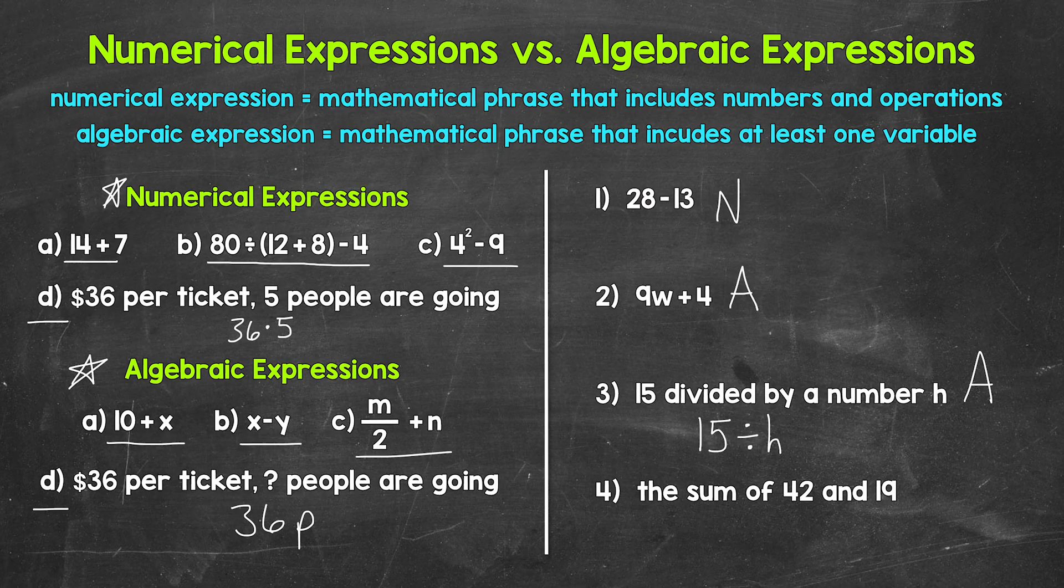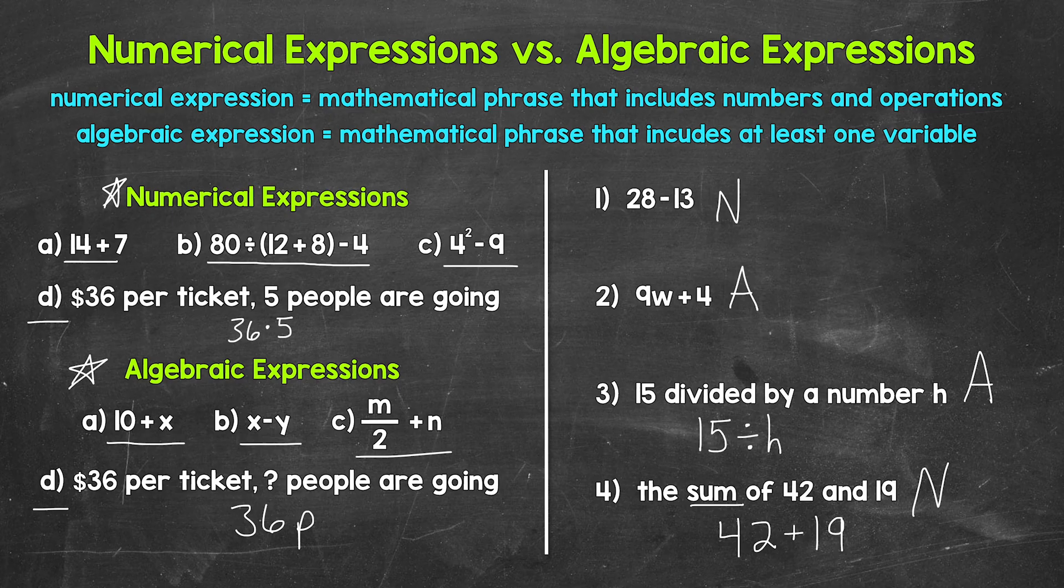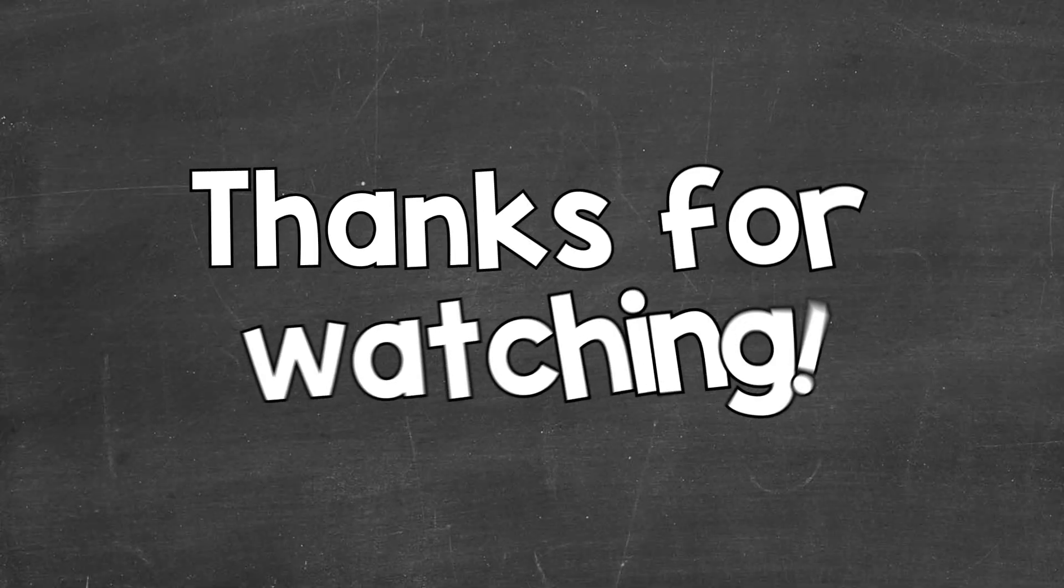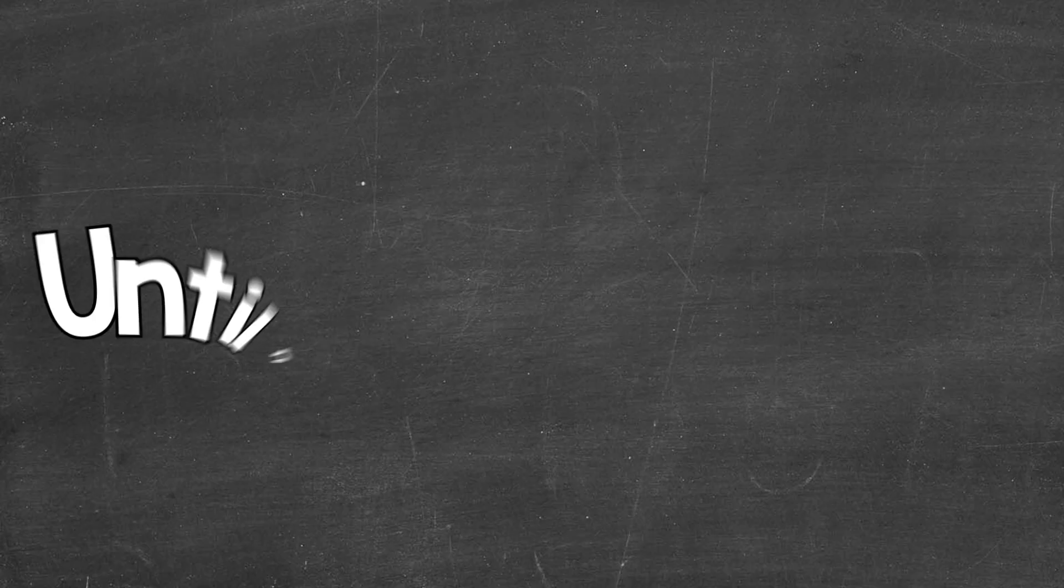And then lastly, number 4, we have the sum of 42 and 19. So we have a word phrase here. Let's rewrite it as an expression. So the sum, that means addition. So 42 plus 19. And this is numerical. So there you have it. There's an explanation of numerical expressions and algebraic expressions. I hope that helped. Thanks so much for watching. Until next time, peace.